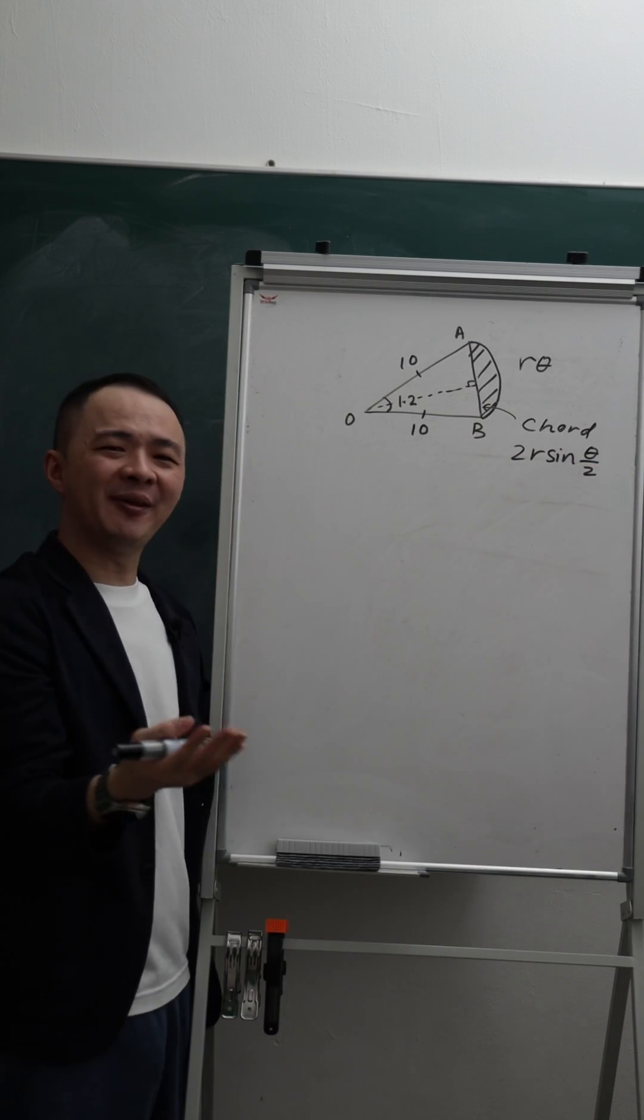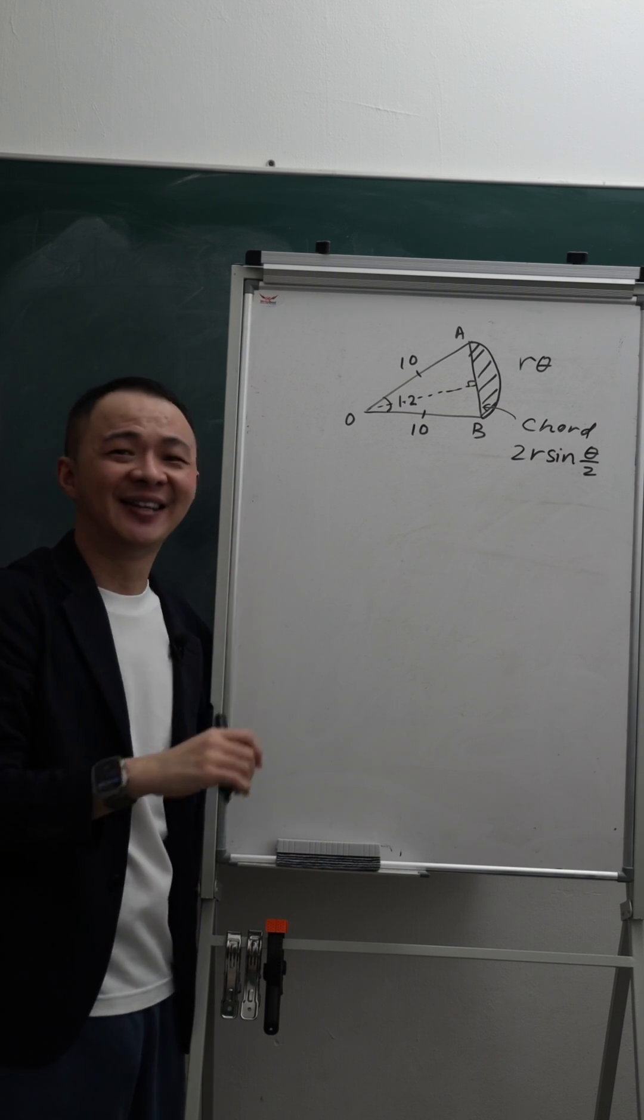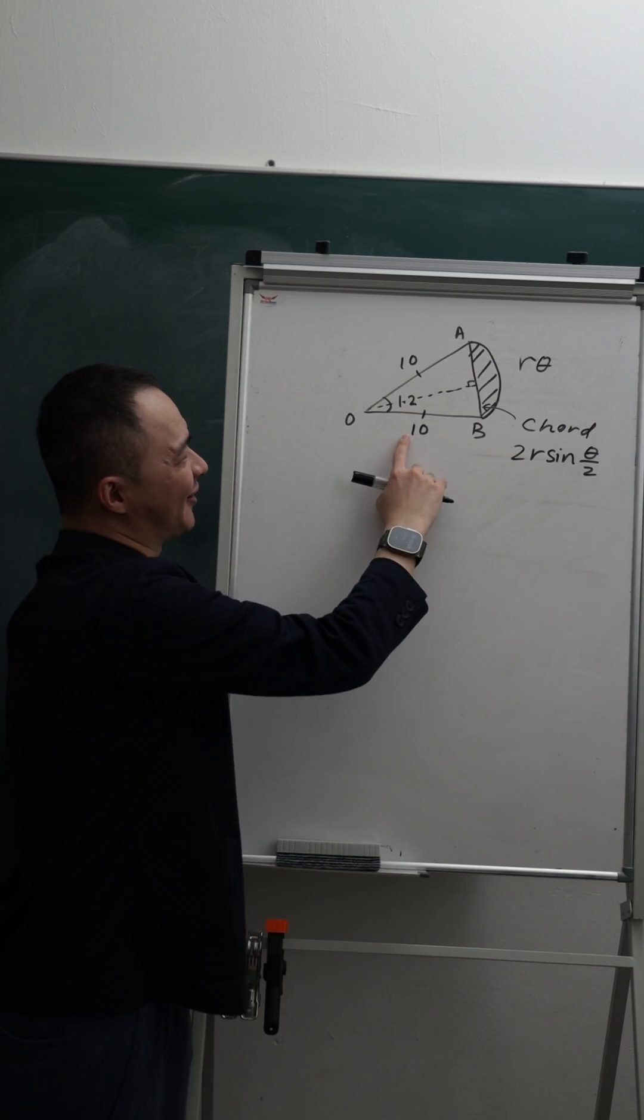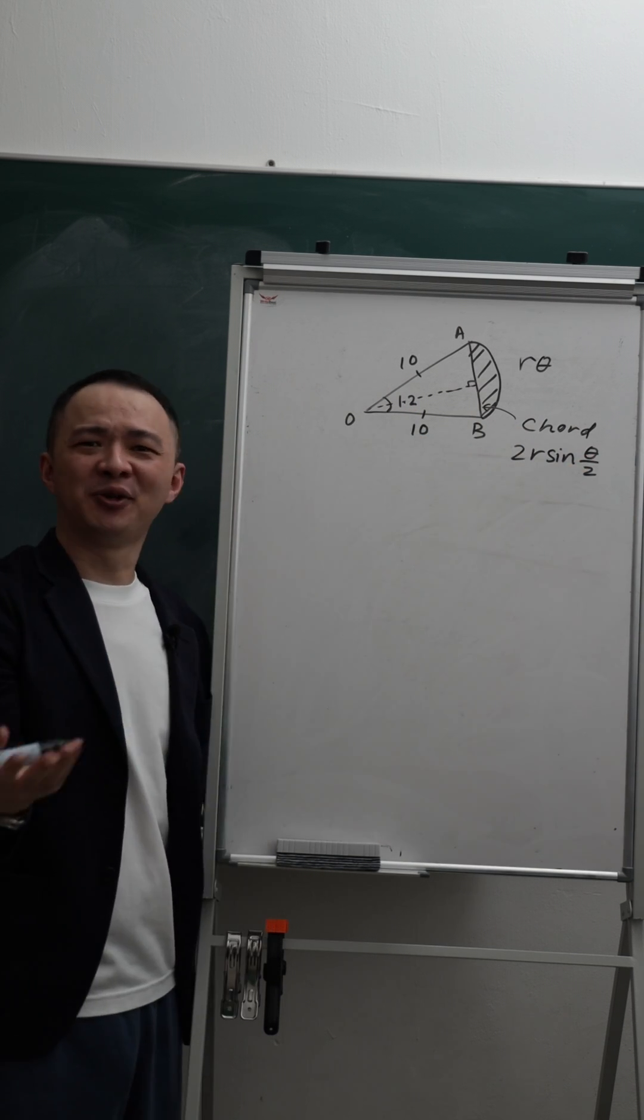So it's not too bad because a lot of students will see complicated formulas and they start to panic already. Actually, R is just 10, your theta is just 1.2, so 1.2 divided by 2 is 0.6.